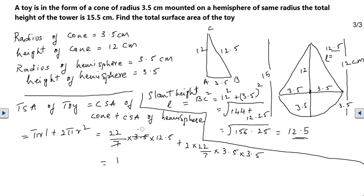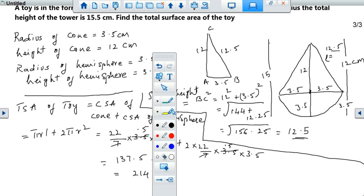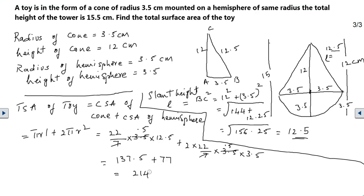Same with the hemisphere. On calculating 22 times 0.5 times 12.5, I get 137.5. For the hemisphere, 2 times 22 times 3.5 times 0.5 gives 77. Adding them gives 214.5 centimeter squared.